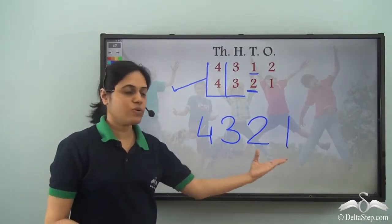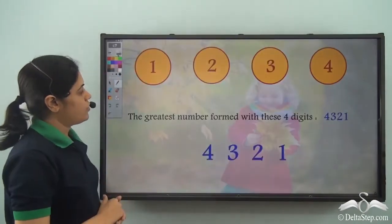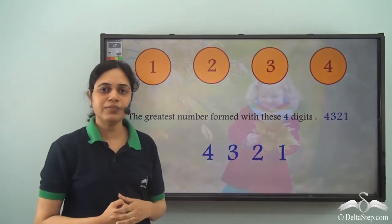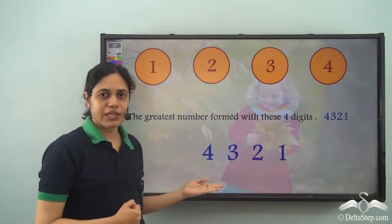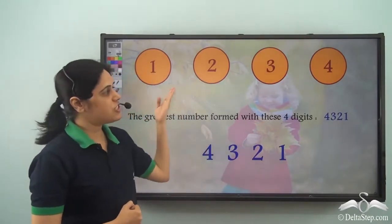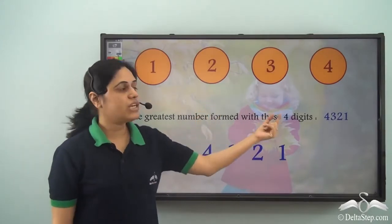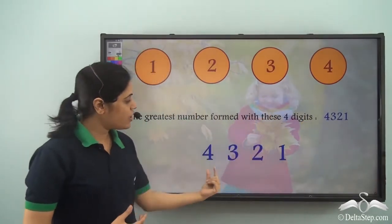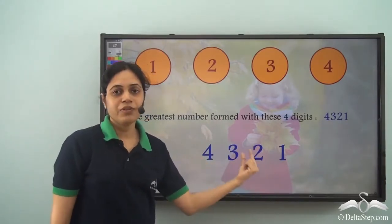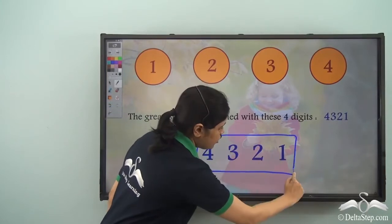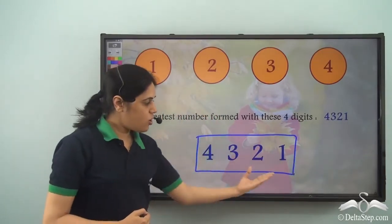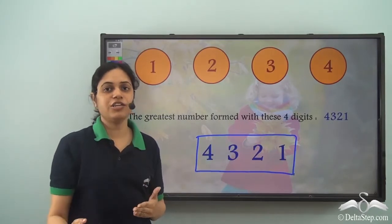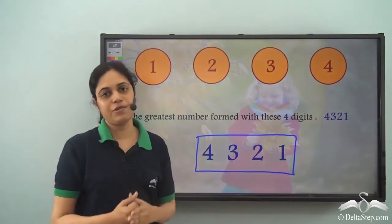So 4321 is the biggest four-digit number you can make using the digits 1, 2, 3, and 4. If you observe carefully, 4321 is nothing but these digits arranged in descending order. So to ensure you win such a game, arrange the digits in descending order and you will get the biggest number using those digits.